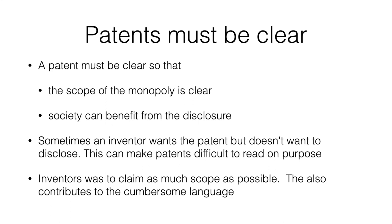Sometimes an inventor wants the patent but doesn't want to disclose, and that can explain why patents are sometimes difficult to read. The precision required to make clear the scope of the monopoly is one reason patents are hard to read, because the patent attorney is trying to make the claims as general as possible so that as much 'real estate' can be fenced in and the monopoly can be as large as possible. There's also an extent to which the patent applicant wants to disclose only as much as is necessary to receive the patent, so some details might be held back.